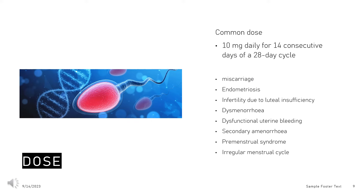Dose — Recurrent Miscarriage (Adult): For cases associated with proven progesterone deficiency, 10 mg twice daily until the 12th or 20th week of pregnancy.